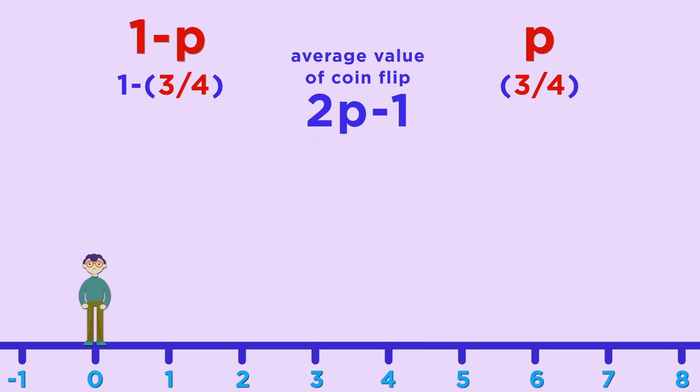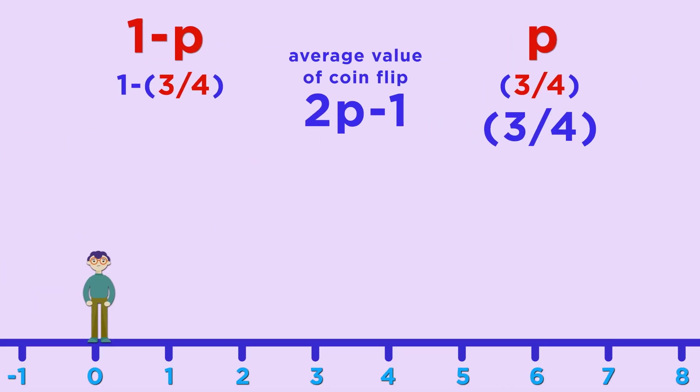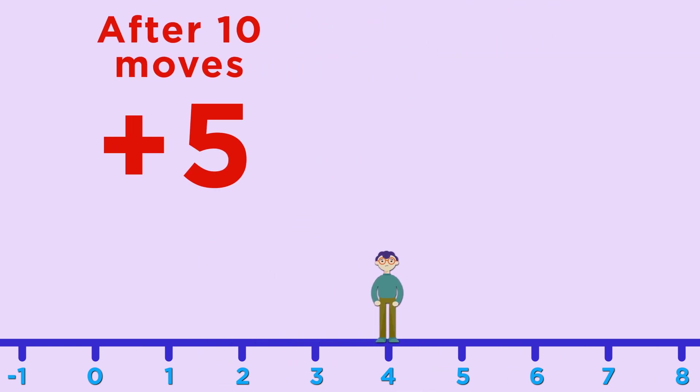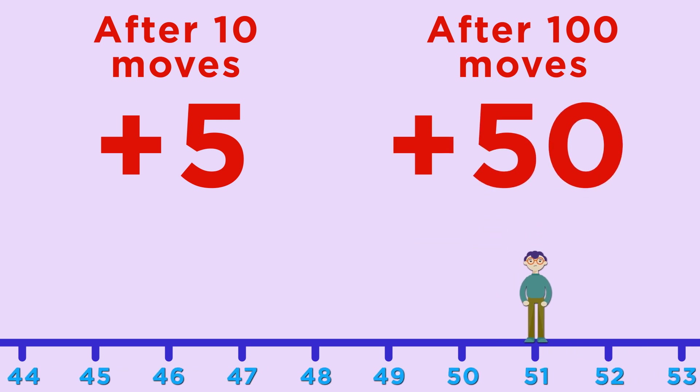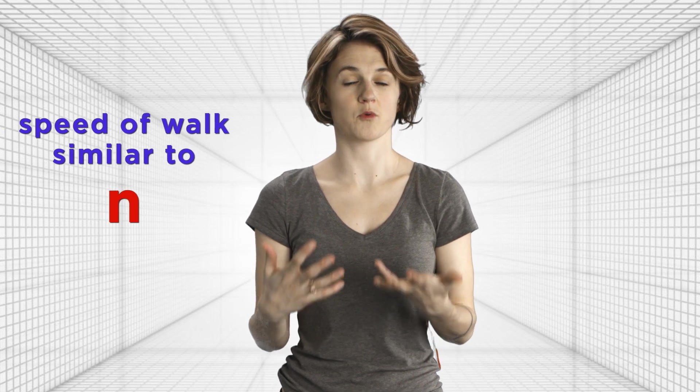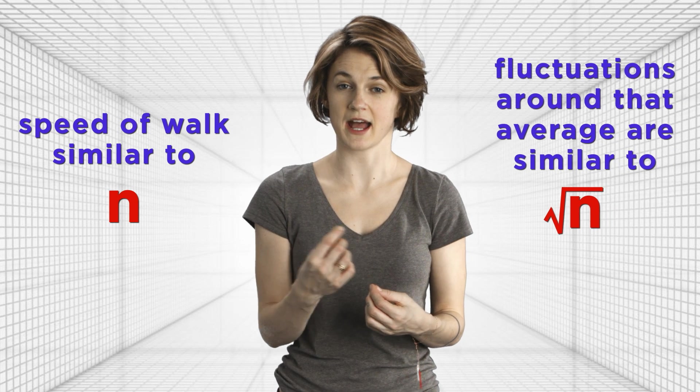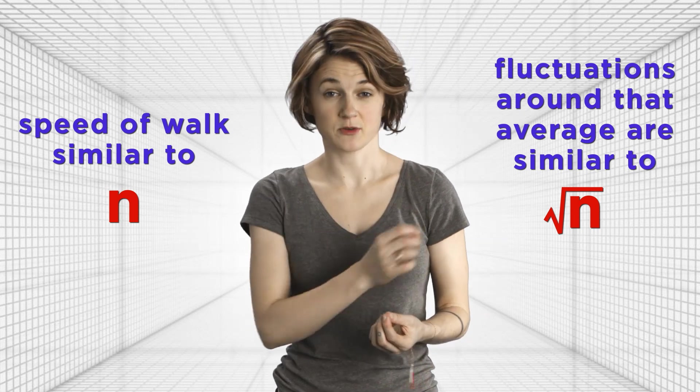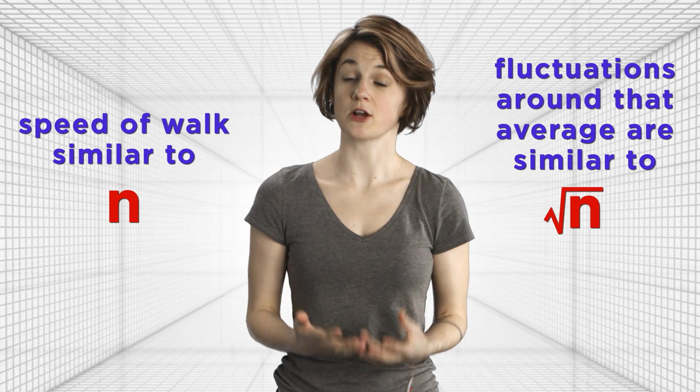For the sake of example, let's assume p equals three-quarters. That means there's a three-quarter chance of moving right and a one-quarter chance of moving left. So 2p minus 1 equals one-half. After 10 moves, you'd expect to be at plus 5, and after 100 moves, you'd expect to be at plus 50. You're moving to the right with speed one-half. So 2p minus 1 is like the speed of the walk. But the random walk isn't going to move at exactly that speed—it will fluctuate around that average, just like the simple random walk fluctuated around 0. While the speed of the walk is similar to n, the fluctuations around that average are similar to the square root of n. So there's really two speeds happening here.